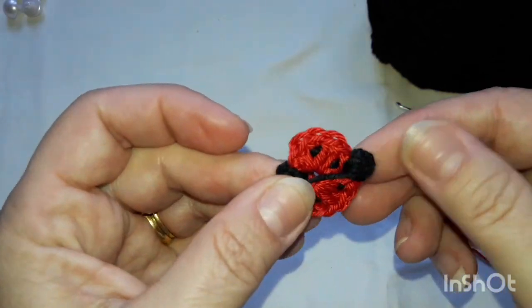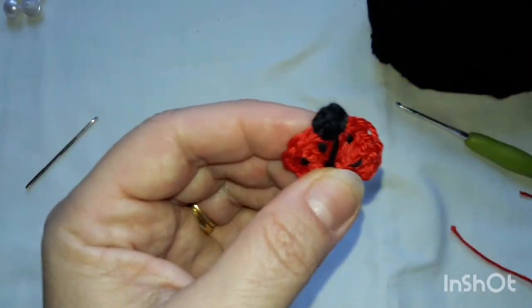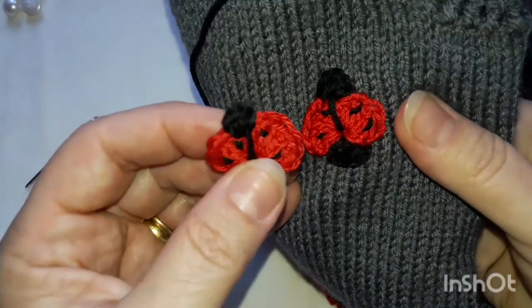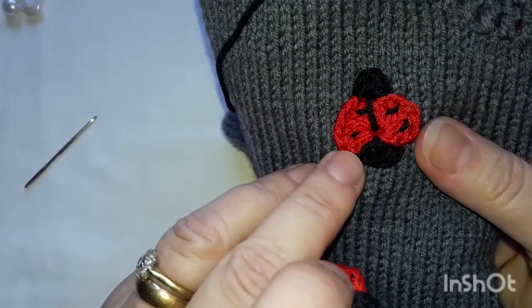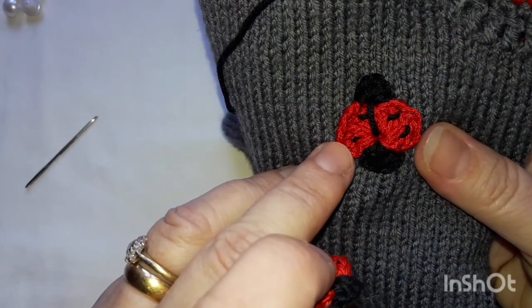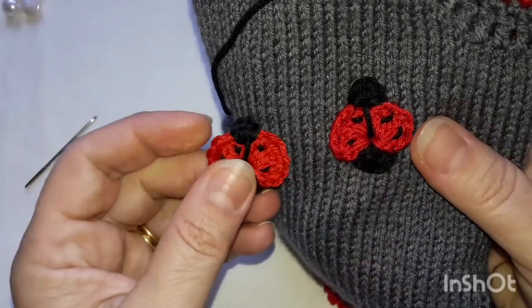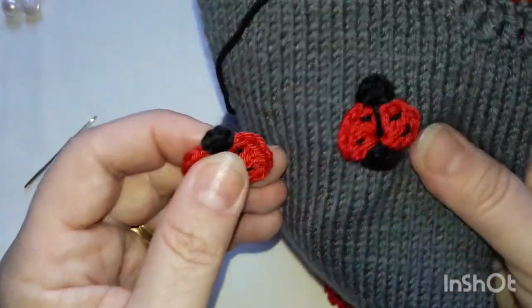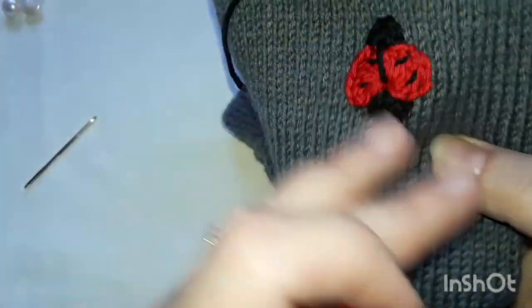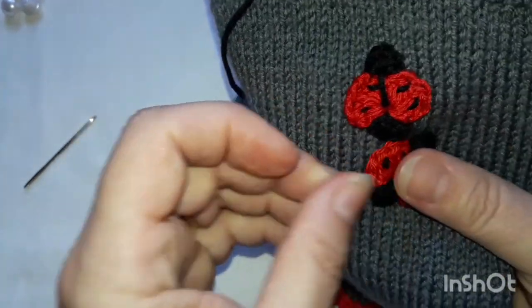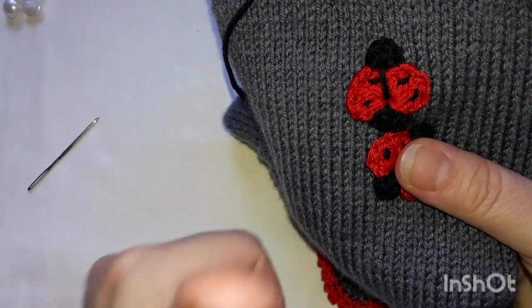And there you have it, there he is. All right, and all you do to sew it on is get some red cotton thread and just sew it to whichever garment you're making, or if it's for this one that I've made. All right, so that's it. Thank you very much for watching, bye.